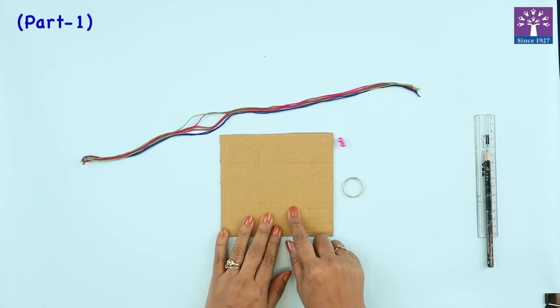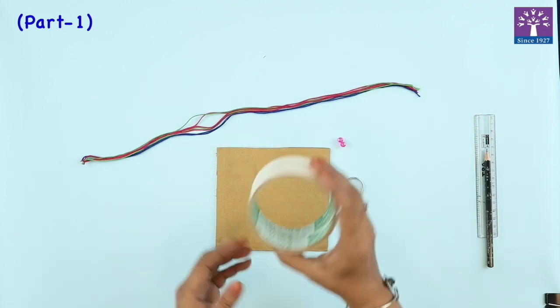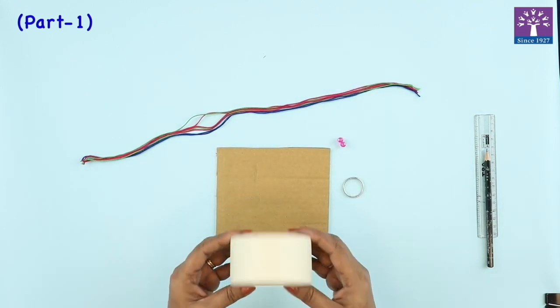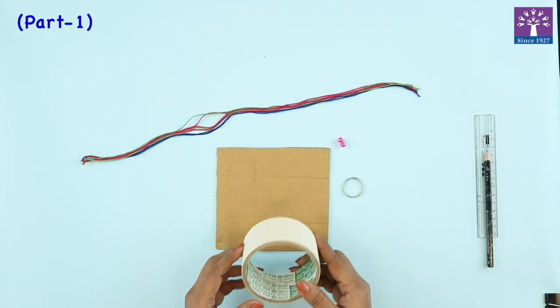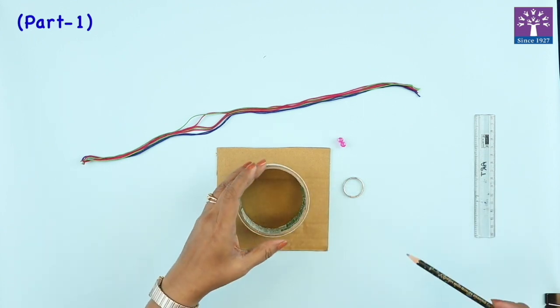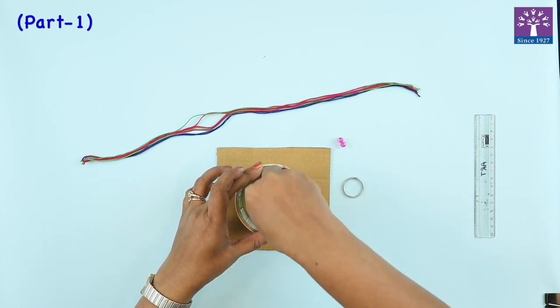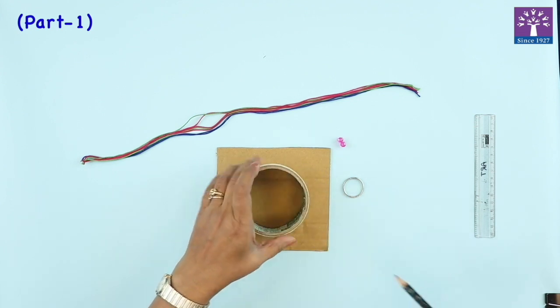We'll make a simple loom. I'm taking any circular object - I'm taking a sellotape roll. If you want, you can take a bangle or anything that you like, or your water bottle cap. Trace a circle.